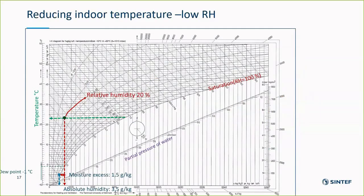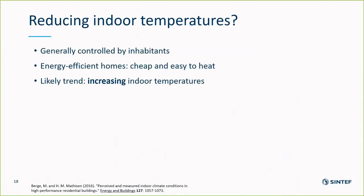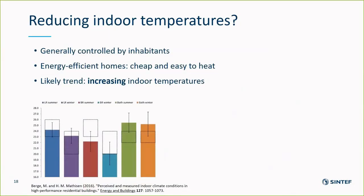We could reduce the indoor temperature. At low temperatures and low relative humidity, the effect won't be very large — perhaps raising humidity from 20 to 26 percent — and users will have started complaining about being cold for quite some time before then. So it's quite limited. Energy-efficient homes are cheap and easy to heat, so it's likely that more people will prefer increasing their temperatures rather than reducing them.